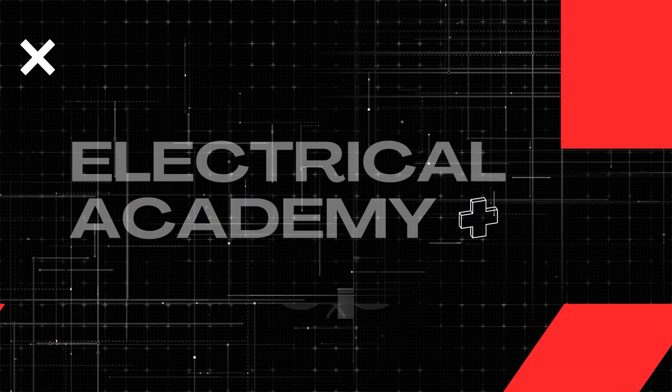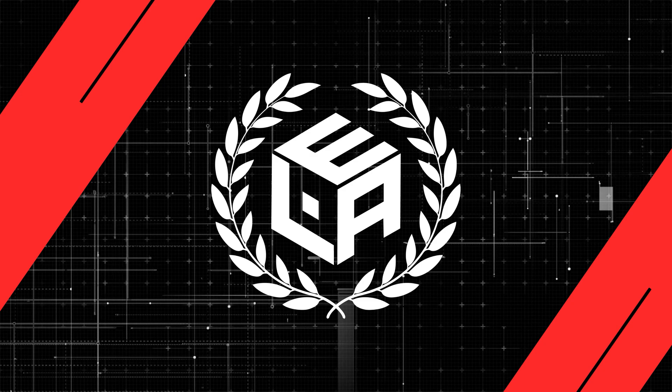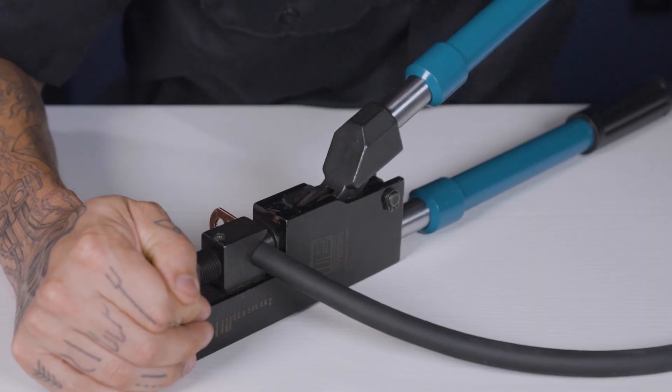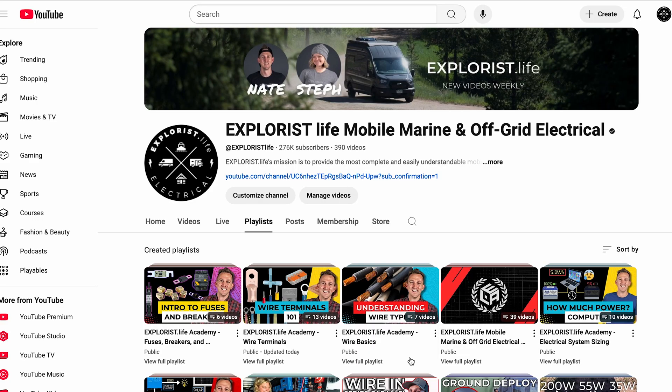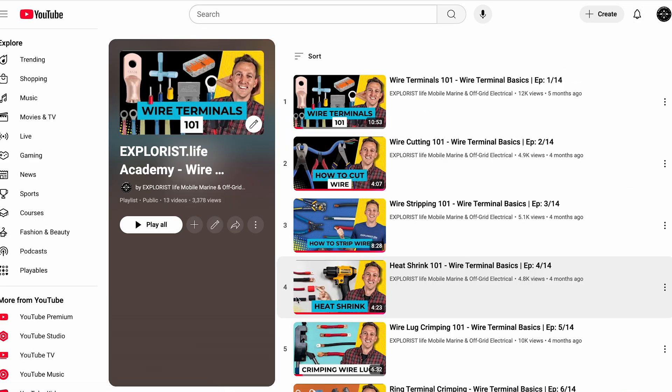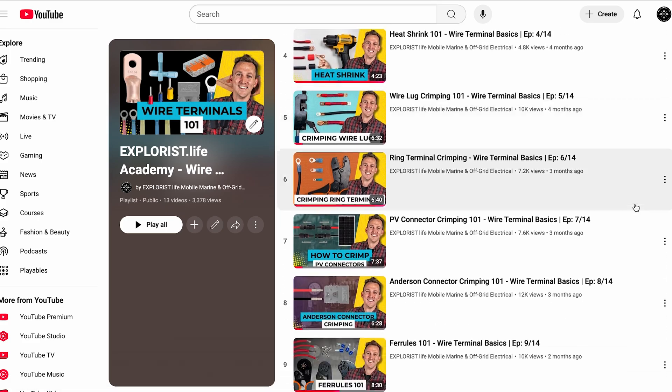Before we get started, there's a couple prerequisite pieces of information you need to know, like cutting wire, stripping wire, and crimping terminals into wire, but we've already covered that in a specific playlist of this academy, so go back and review that if you don't already know how to do this part.